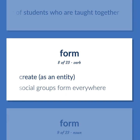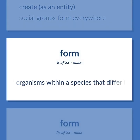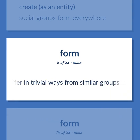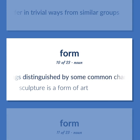Create, as an entity. Social groups form everywhere. Biology: a group of organisms within a species that differ in trivial ways from similar groups. A category of things distinguished by some common characteristic or quality. Sculpture is a form of art.